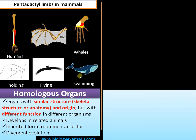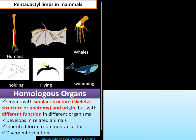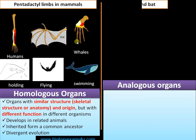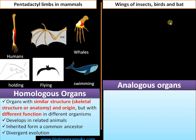So homologous organs are organs having the same structure and same origin but different function in different groups of organisms. Often these organisms are related groups, and this structure is often inherited from a common ancestor. The reason is divergent evolution. Whereas in the case of analogous organs, the example is wings of insects, birds, and bats.